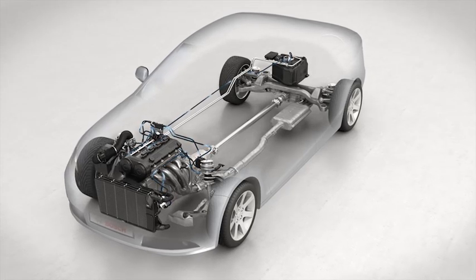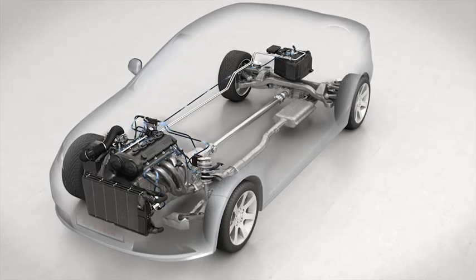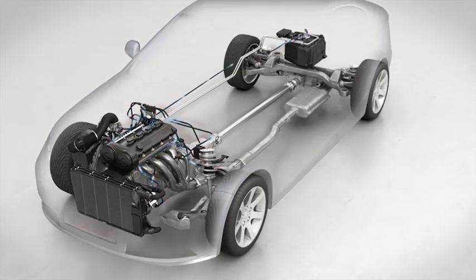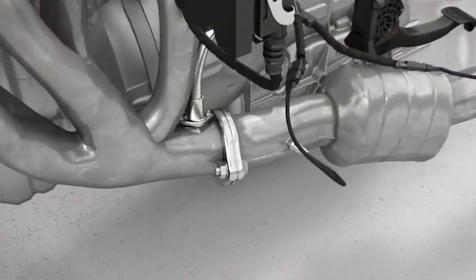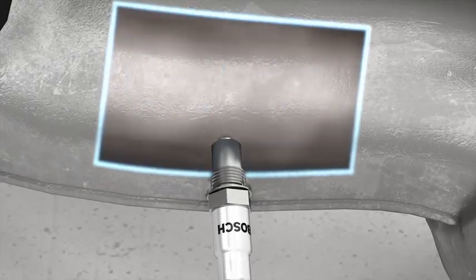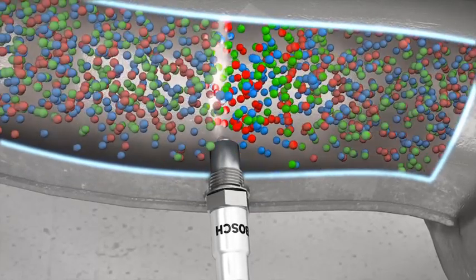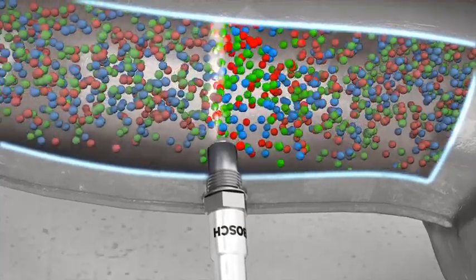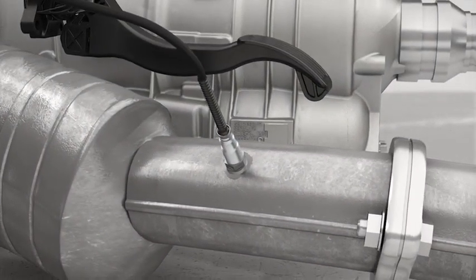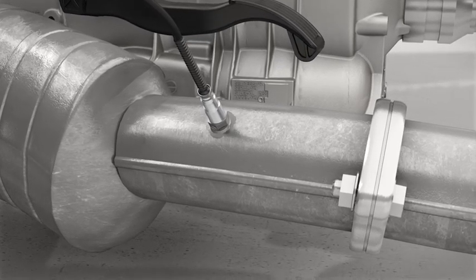Bosch exhaust gas treatment ensures that all international emissions regulations are adhered to. To create optimal working conditions for the catalytic converter, the exhaust gas must have the prescribed oxygen content. The broadband lambda sensor measures the oxygen content of the exhaust gas, thus providing the engine control unit with the key information needed to form the right mixture. As a control measure, a planar lambda sensor is installed behind the catalytic converter to monitor the composition of the exhaust gas.